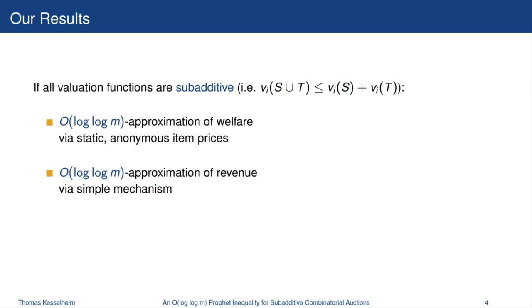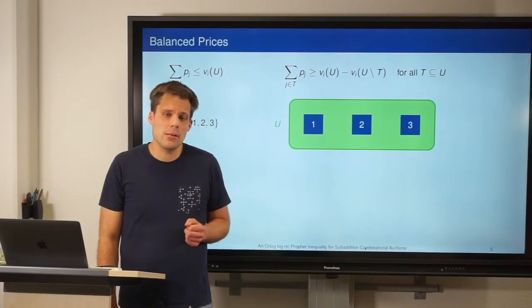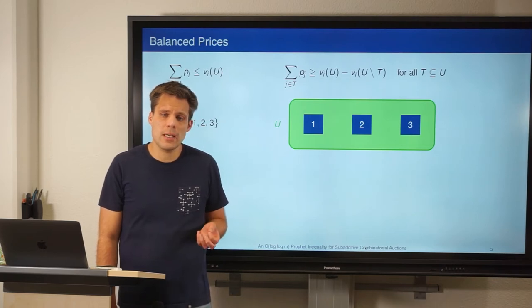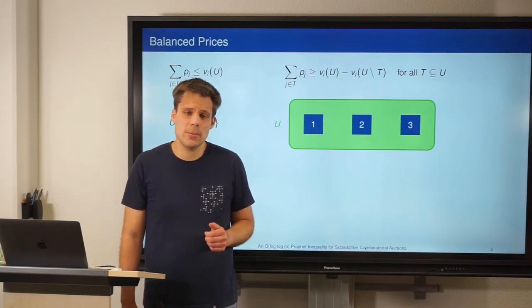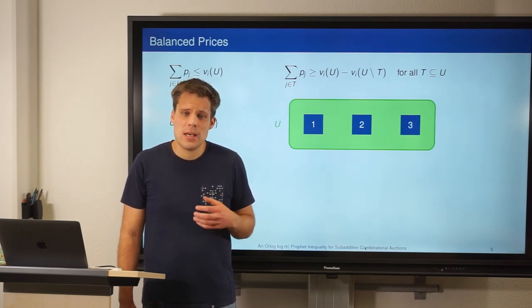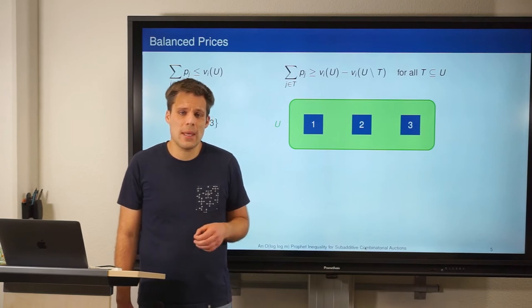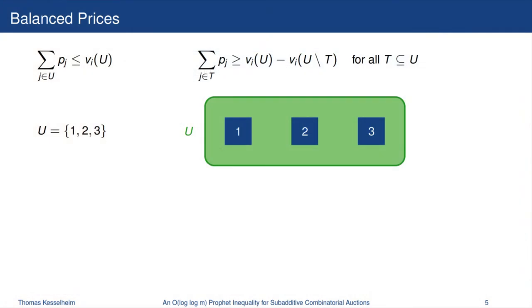We also show that both these mechanisms run in polynomial time given access to demand oracles. To give you an idea of how we get there, let's first take a detour to understand why XOS functions are usually much easier to work with than subadditive functions — because XOS functions admit something that I want to call balanced prices. Assume that you want to maximize welfare and there's just one buyer in mind who should buy these three items, and you want to set prices so that, loosely speaking, nothing can go wrong. These prices shouldn't be too low and they shouldn't be too high.